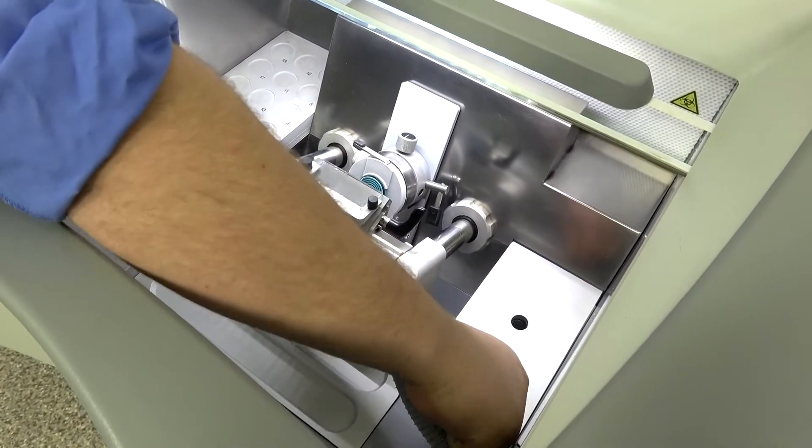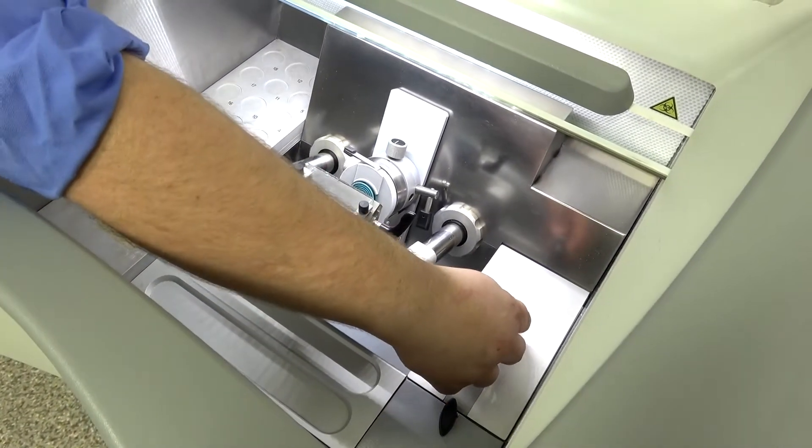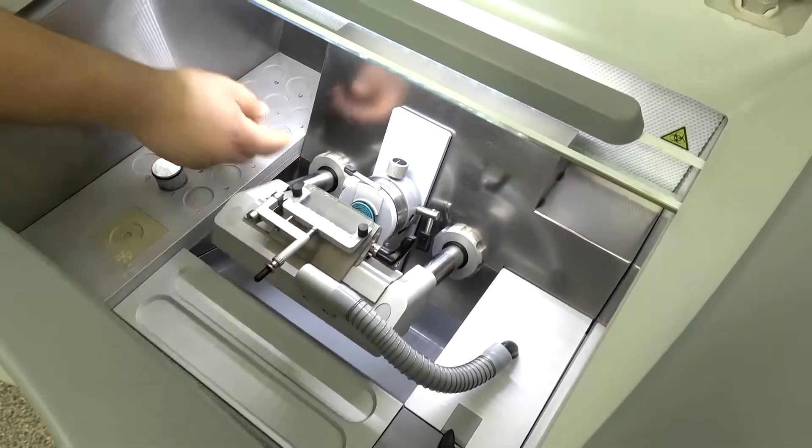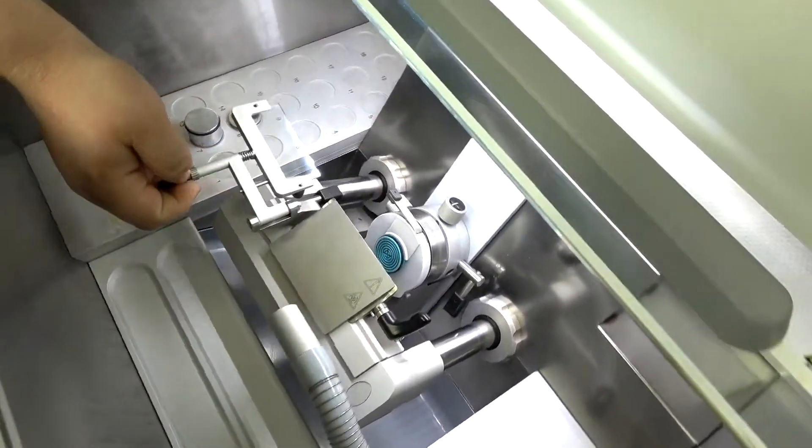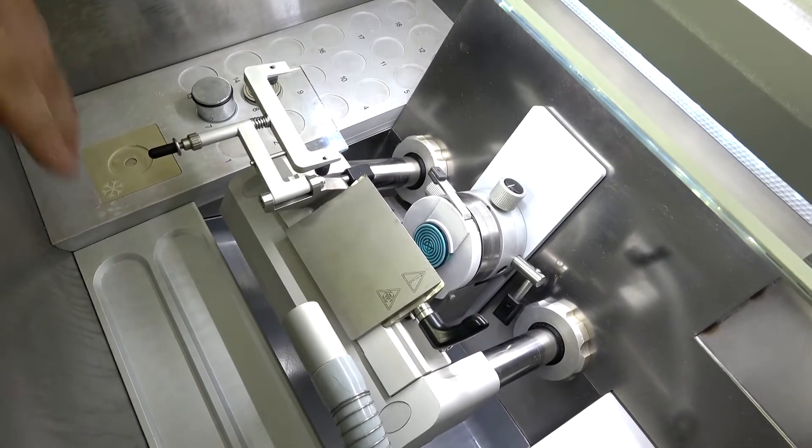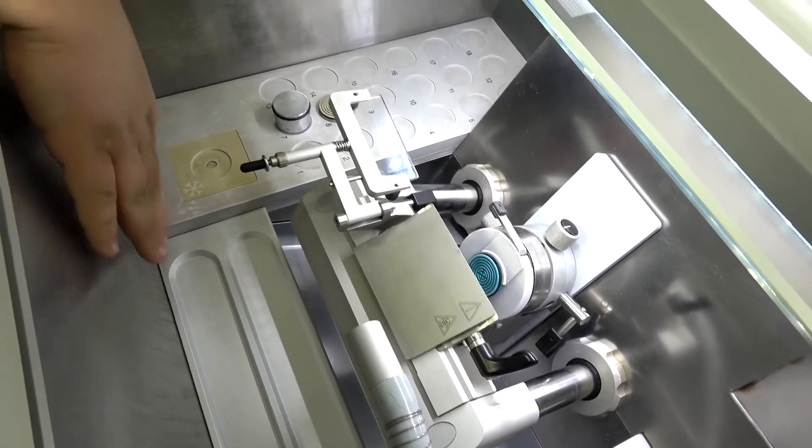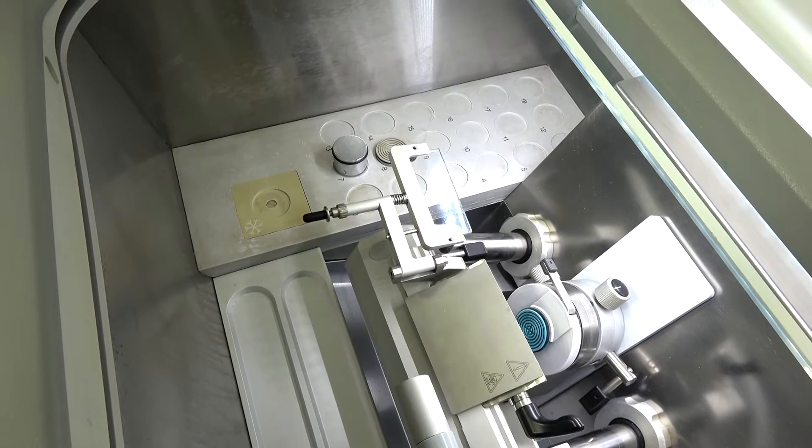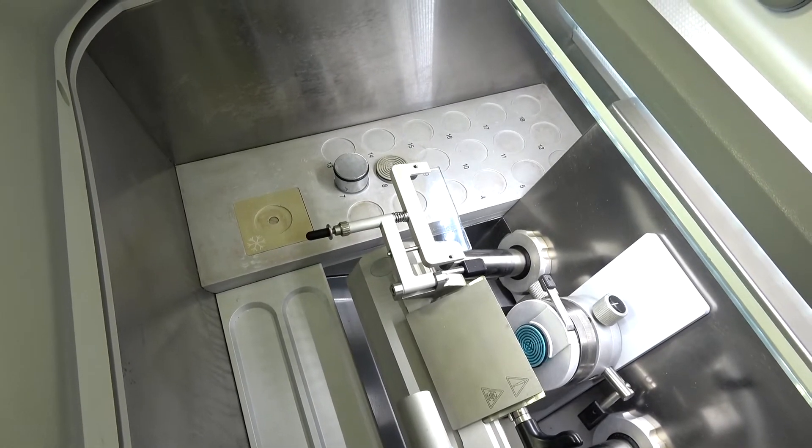While we're in the chamber, this unit comes with a cold knife and cold head so your knife is chilled along with your specimen head. This unit over here to the left has a cryo bar for all your chilling needs.